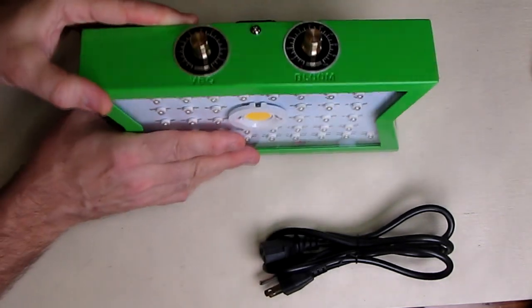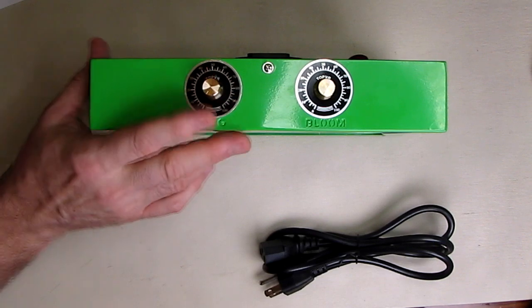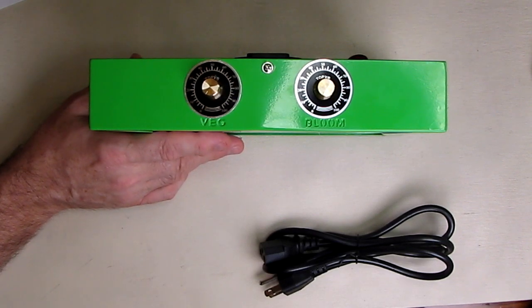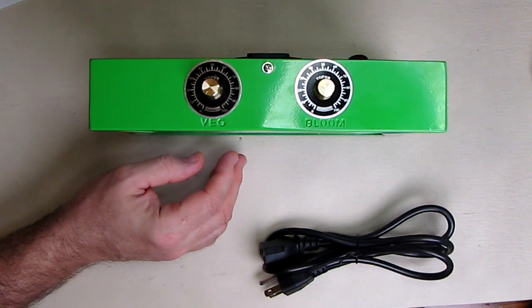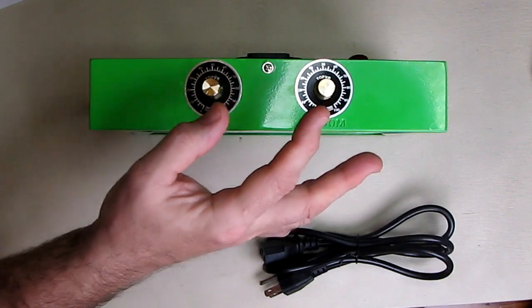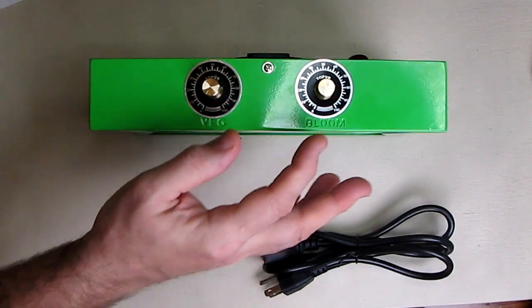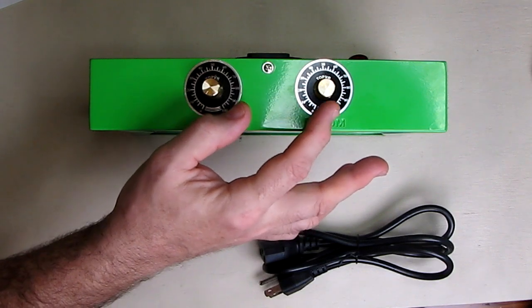Now this fully adjustable control goes from veggie all the way to bloom, and with that blue red spectrum you can have full control of the different growing stages of your plant. You could research what plant you have and see what percentage you're going to need for those different growing stages.